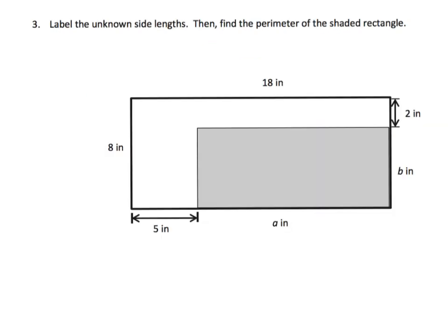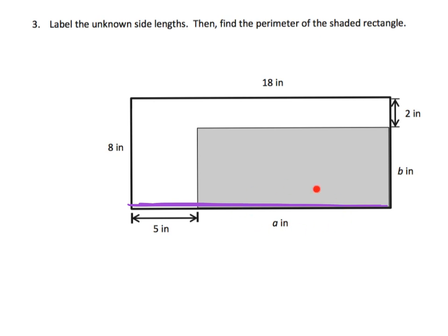For the last problem, we're supposed to label the unknown side lengths and then find the perimeter of the shaded part. This shape might look like a house with a yard or a game board. If this entire length up here is 18, and this piece is five, then this piece right here must be thirteen. So A has to be thirteen inches.